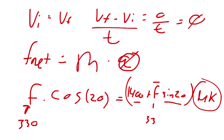330 times the cosine of 20, this equals 310, and 310 is equal to 1400 plus 330 times sine of 20, times mu k. This is equal to 1512.86 mk, and so if we do the division, 310 divided by this 1512, the coefficient of kinetic friction equals 0.2049. And so you can round that up to 0.205 if you want, that would be fine.